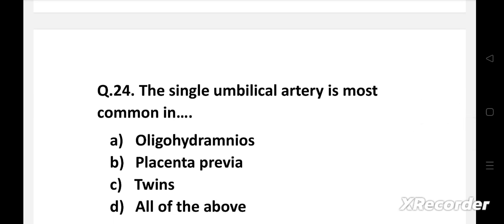Next question: The single umbilical artery is most common in - Option A: Oligohydramnios, B: Placenta previa, C: Twins, D: All of the above.